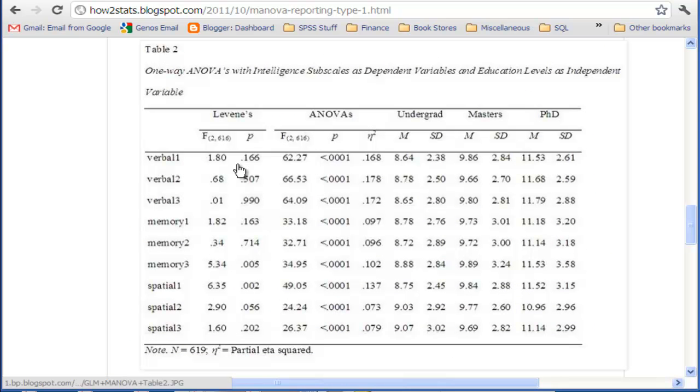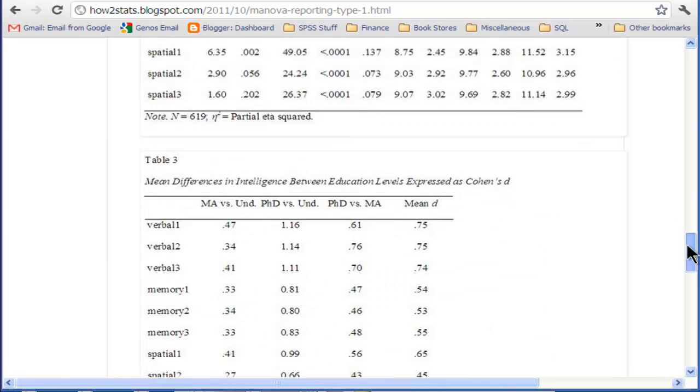I've actually got another table here for the Levine's test. You might want to look at one way. I've got it all crammed into one table, which I think is probably not too crammed. The Levine's test here for each of the dependent variables, the ANOVAs, and then the means and standard deviations.